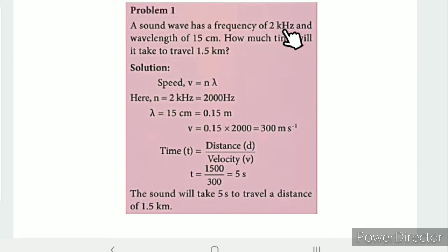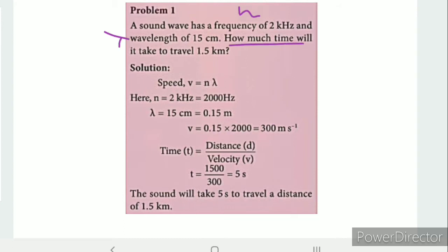Problem: A sound wave has a frequency of 2 kHz and a wavelength of 15 cm. How much time does it take to travel 1.5 km? We denote frequency as n, wavelength as lambda, and we need to find the time t to travel 1.5 km. First, we will find the velocity.